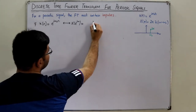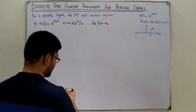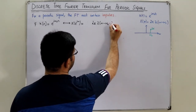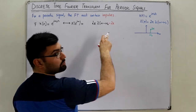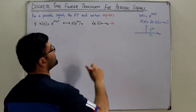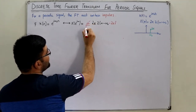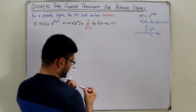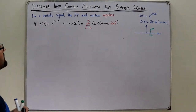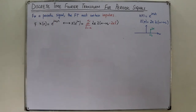An impulse is located at ω₀, and for the periodicity we include a term with negative 2π. This periodicity extends over an infinite interval from negative infinity to positive infinity, so we introduce a summation variable L running from negative infinity to positive infinity. This gives the Fourier transform for the exponential signal.